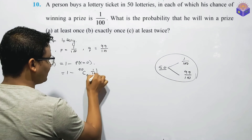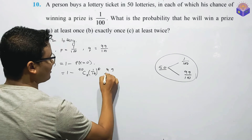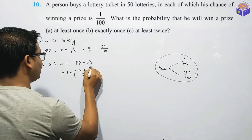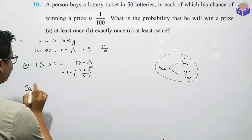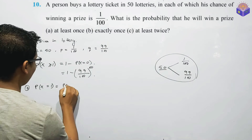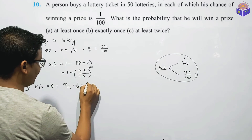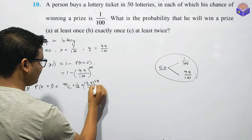Then you can get 99 upon 100, all to the power of 50. Then to get exactly one win, P of X equal to 1: 50C1 is 1. Then 1 by 100 to the power of 1, and 99 upon 100 to the power of 50 minus 1, which is 49.